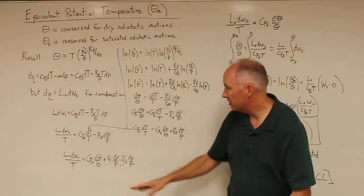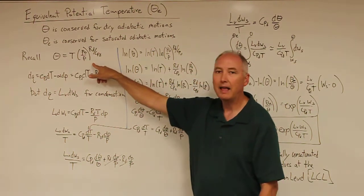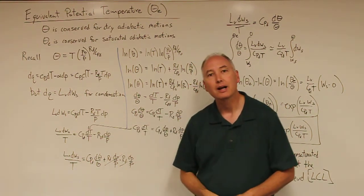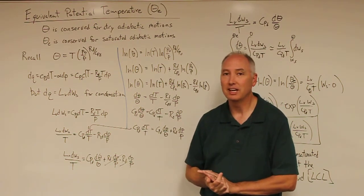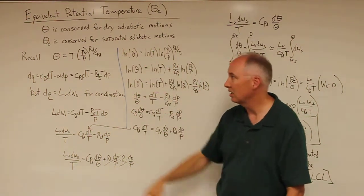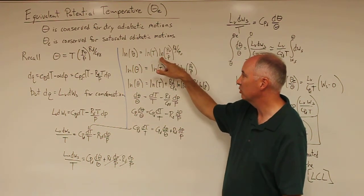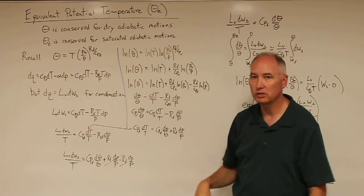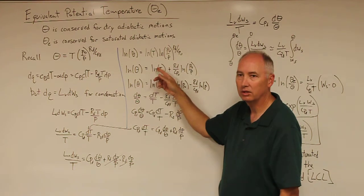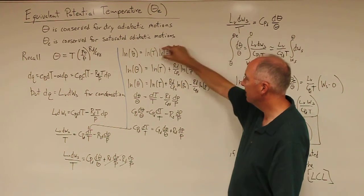Now we're going to find a substitution for the right-hand side terms. We start with the potential temperature equation and do some mathematical manipulations. Taking the natural logarithm of both sides: ln(theta) equals ln(T) plus R_D over C_pD times ln(P_0 over P). Since the natural log of A times B equals ln(A) plus ln(B), and exponents can be brought in front, we expand this expression. Then the natural log of A over B equals ln(A) minus ln(B).